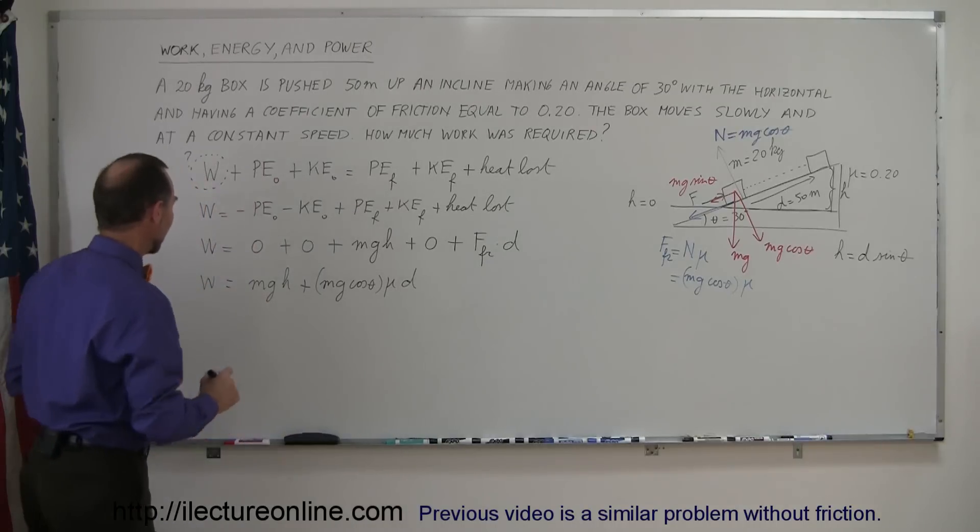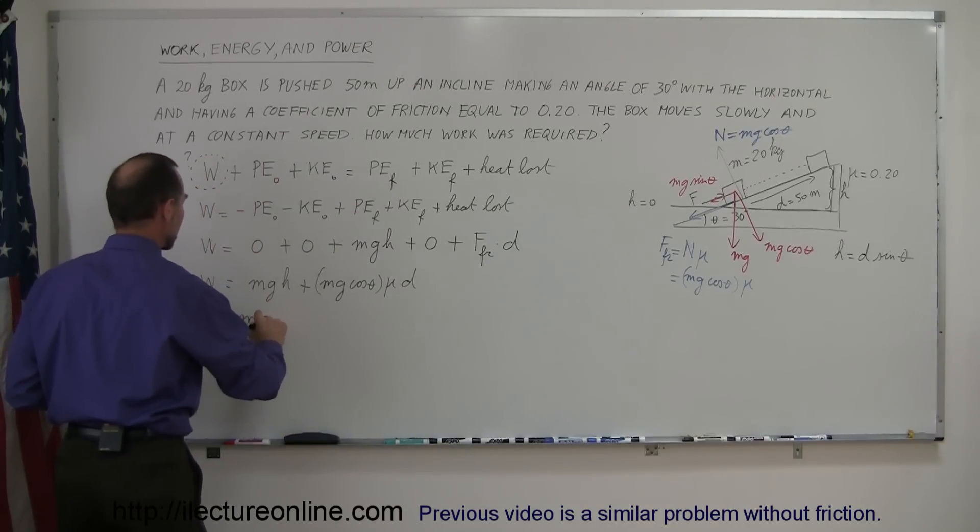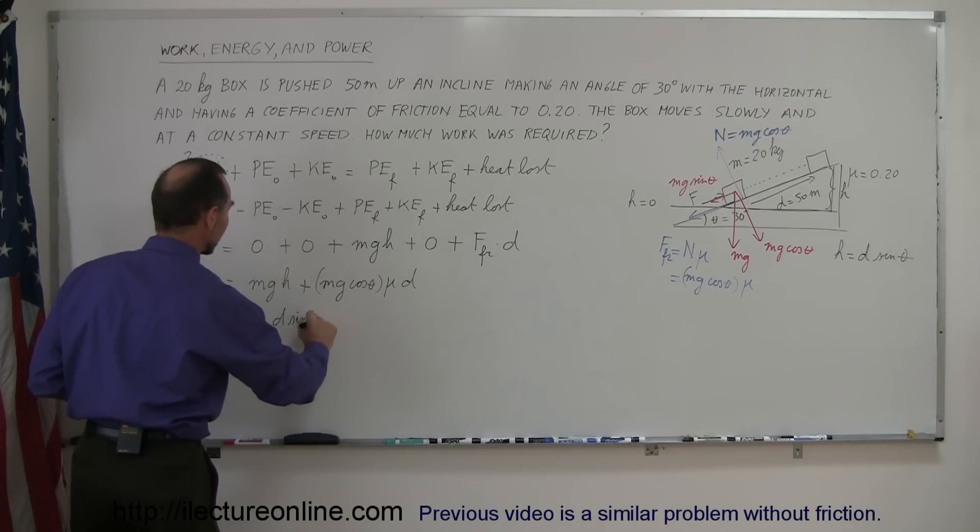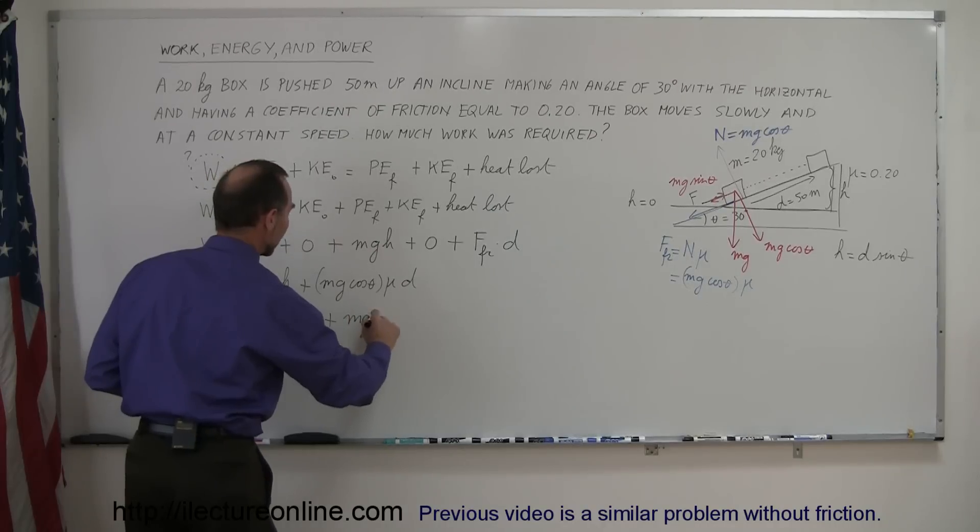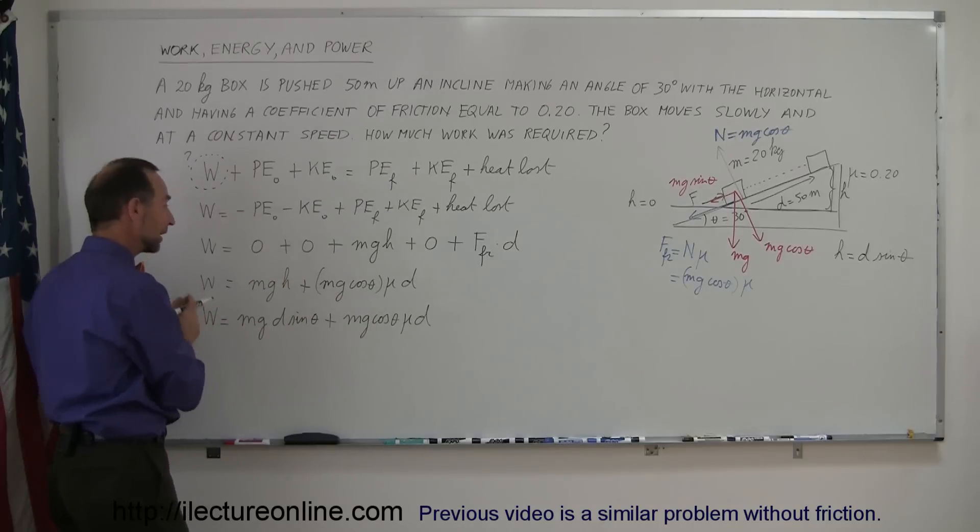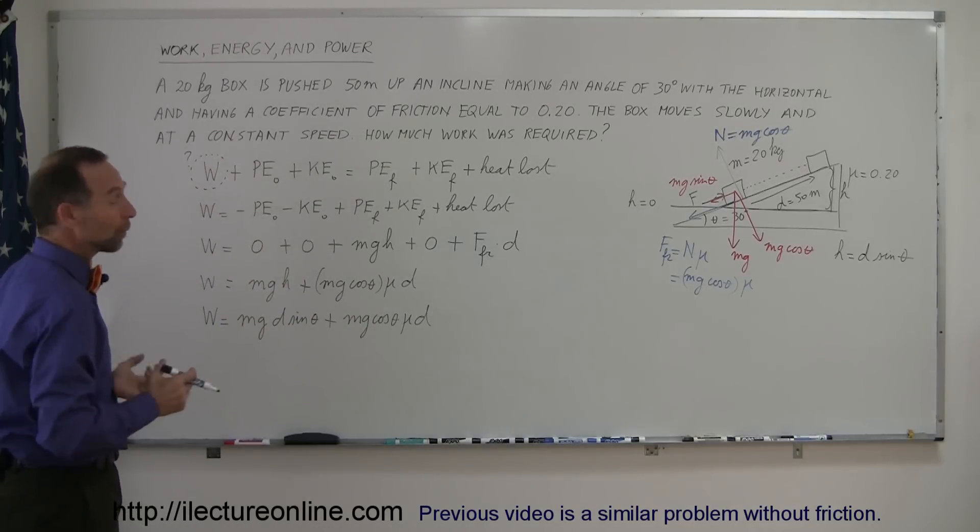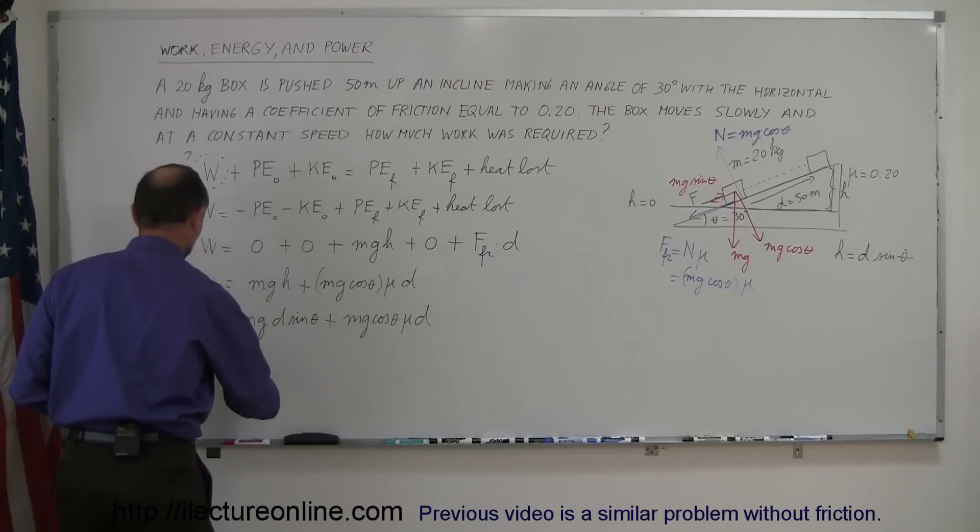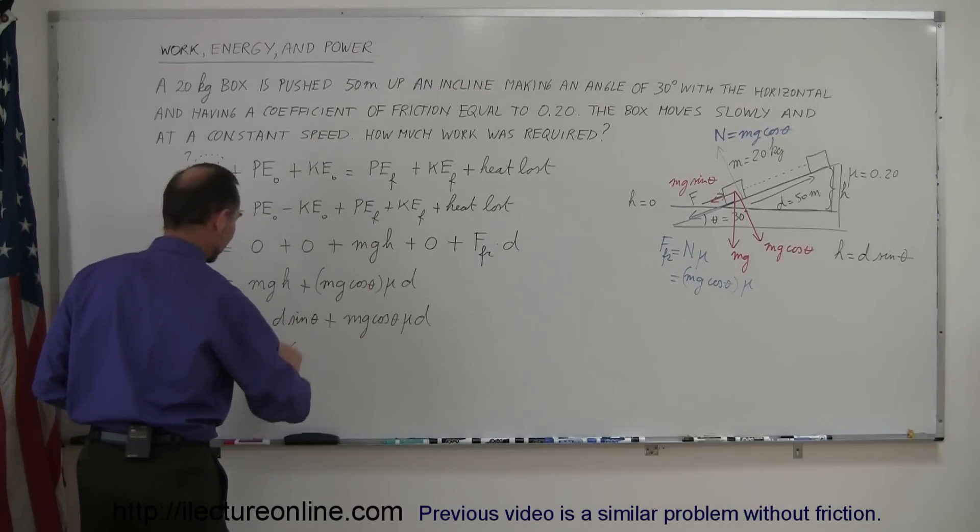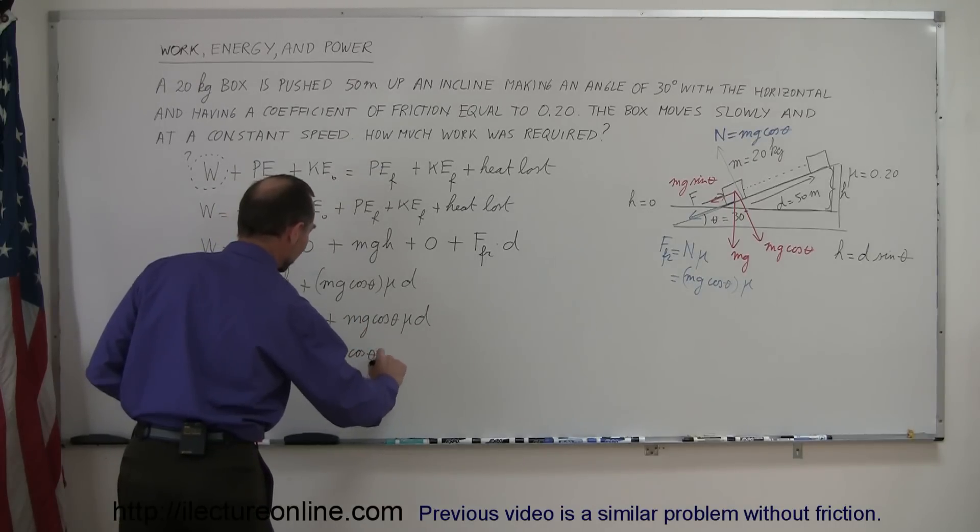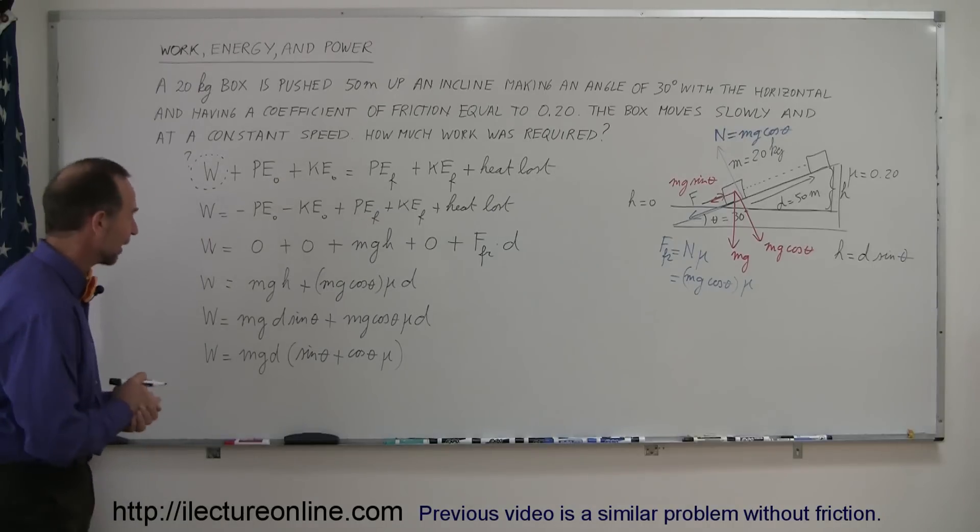We plug that in here for height, so we can say that the work done is equal to Mg times the height, which is d sine theta, plus Mg cosine theta mu times d. And now we have an equation that will allow us to calculate the work done to push the block up the incline. All we have to do now is plug in the numbers, although when you look at it, there's an M, a G, and a D, that's all the same in both terms, so let's factor that out. The work done is equal to Mgd times the first term, we have a sine of theta left over, and the second term we have a cosine of theta times mu left over. Makes it a little bit easier to figure out the numbers.